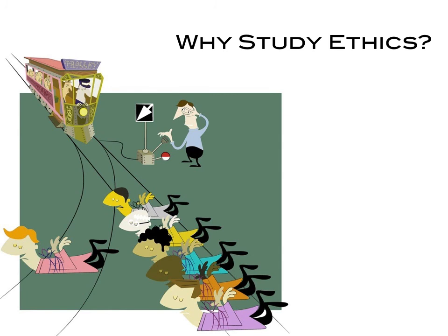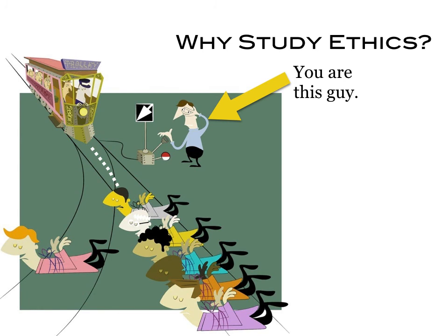Oftentimes what ethicists do is they look at hypothetical ethical dilemmas, such as a dilemma known as the trolley problem. On your screen you can see a picture of a guy standing at a switch. In this hypothetical situation, you are this guy. A trolley cart is going down the tracks, and it is actually heading for five innocent bystanders who are tied to the tracks. If you ask how they got there, all we need to know is they got there by no fault of their own — it was unlucky circumstances.